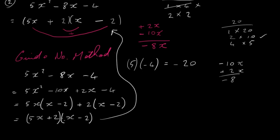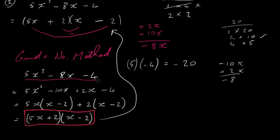This gives us (5x + 2)(x − 2) — exactly the same as what we got with the first method. These two expressions multiply together to give the original expression 5x² − 8x − 4, so they are its factors.